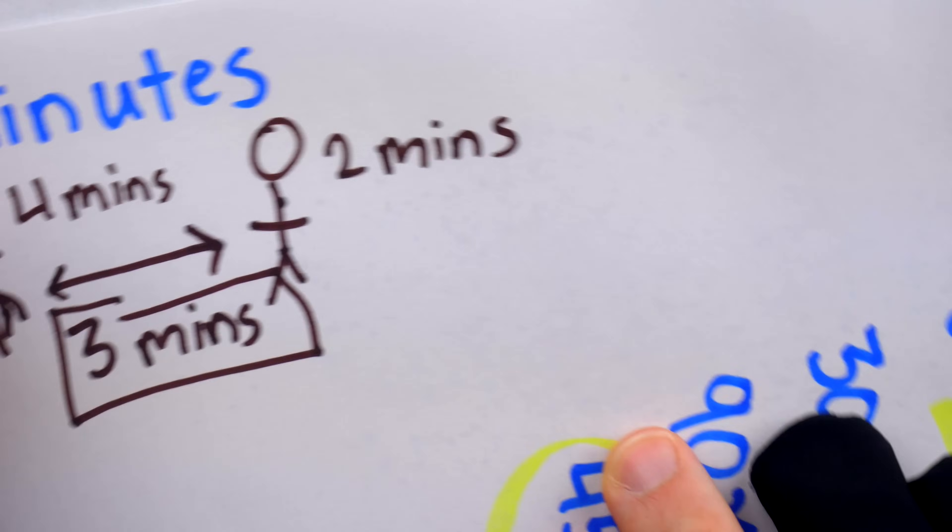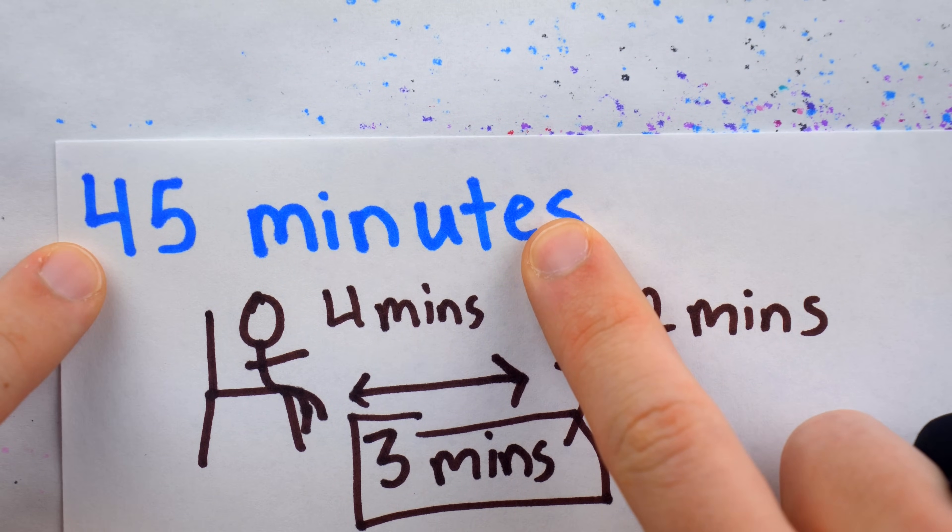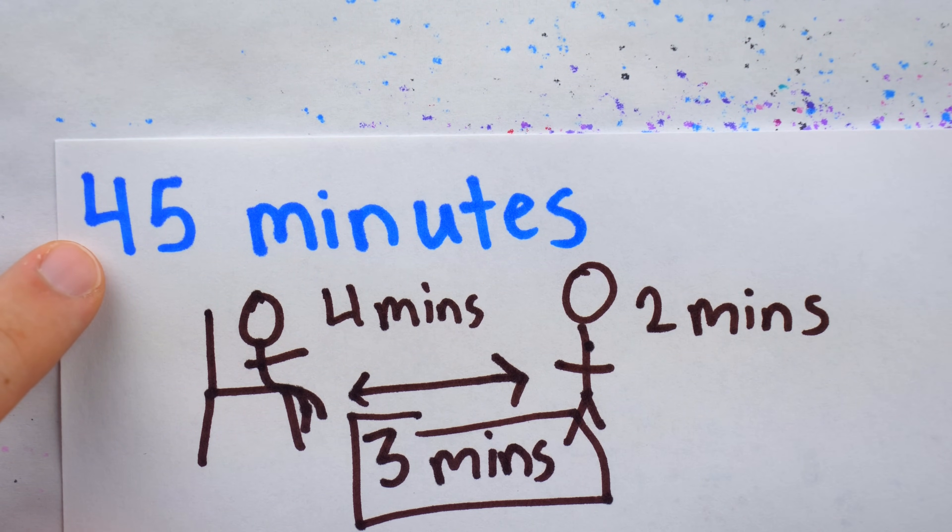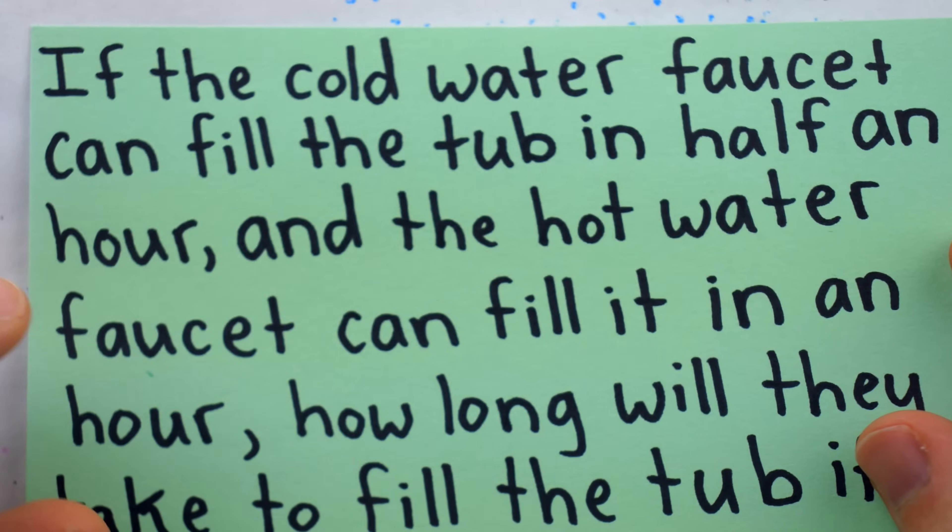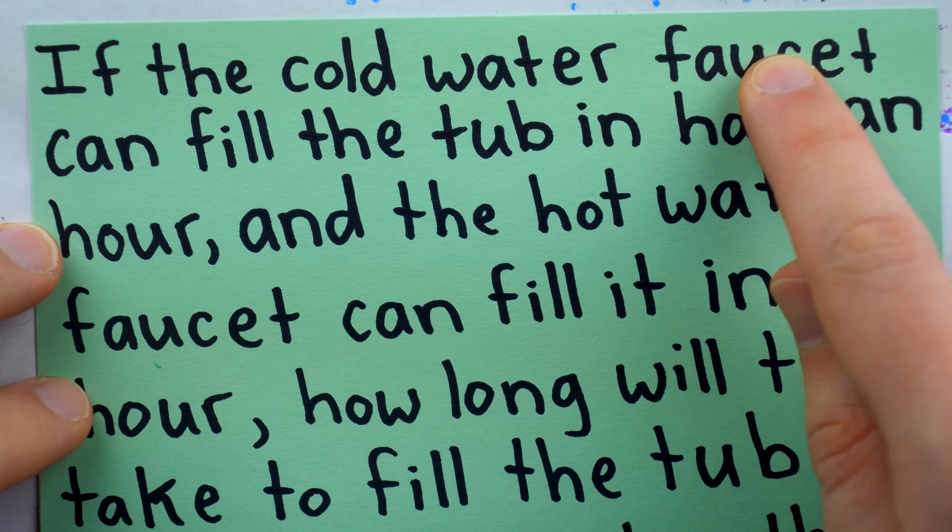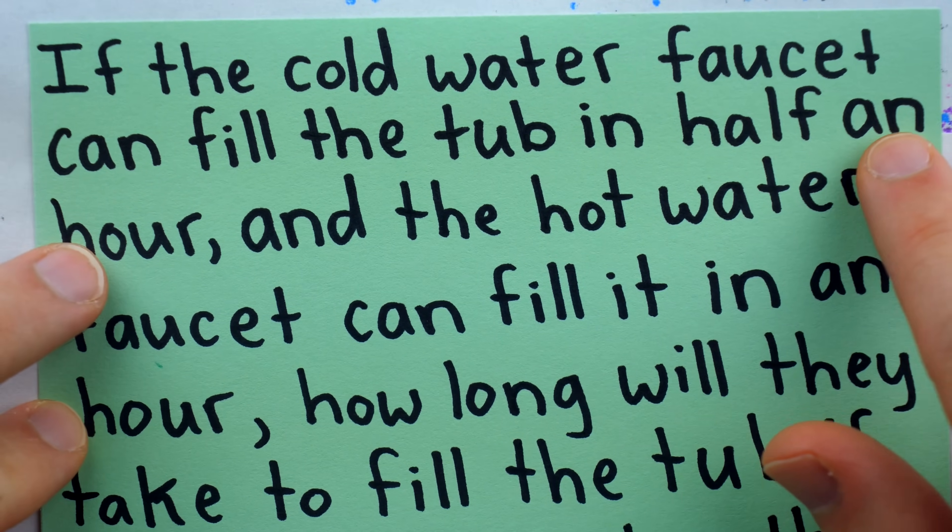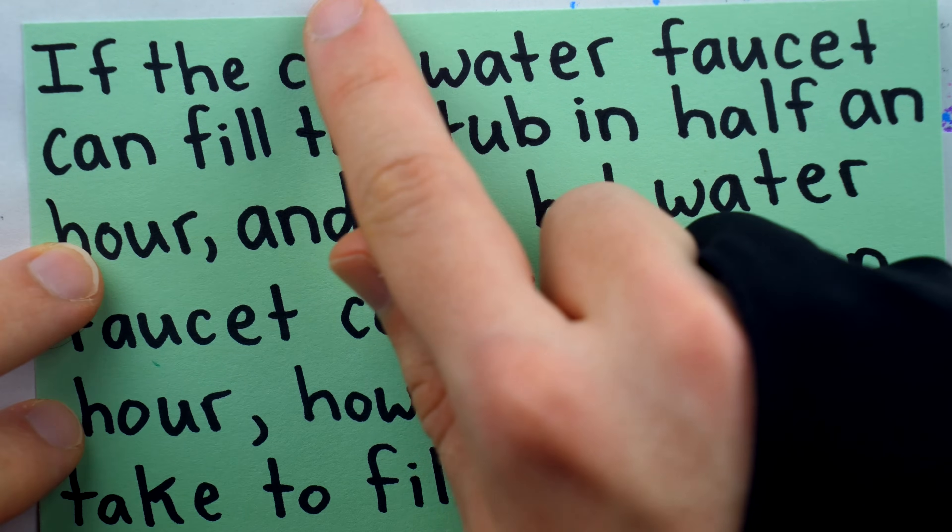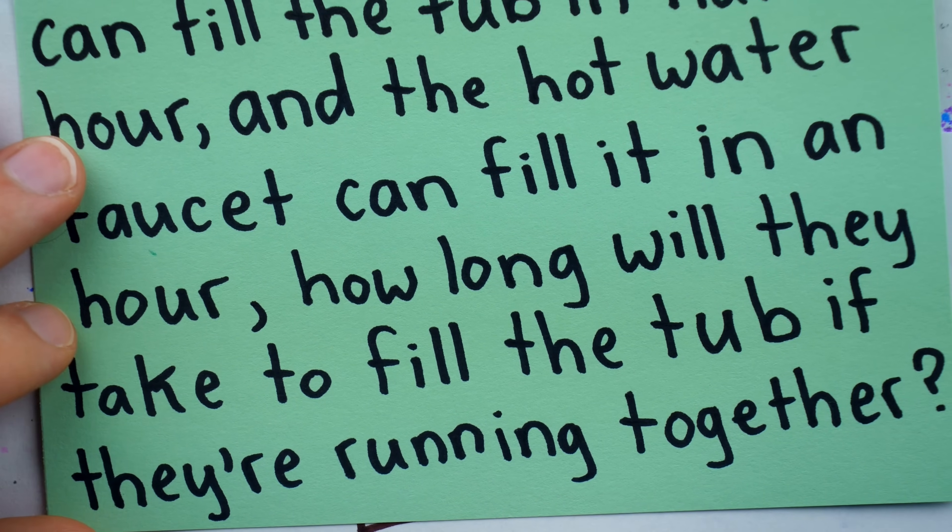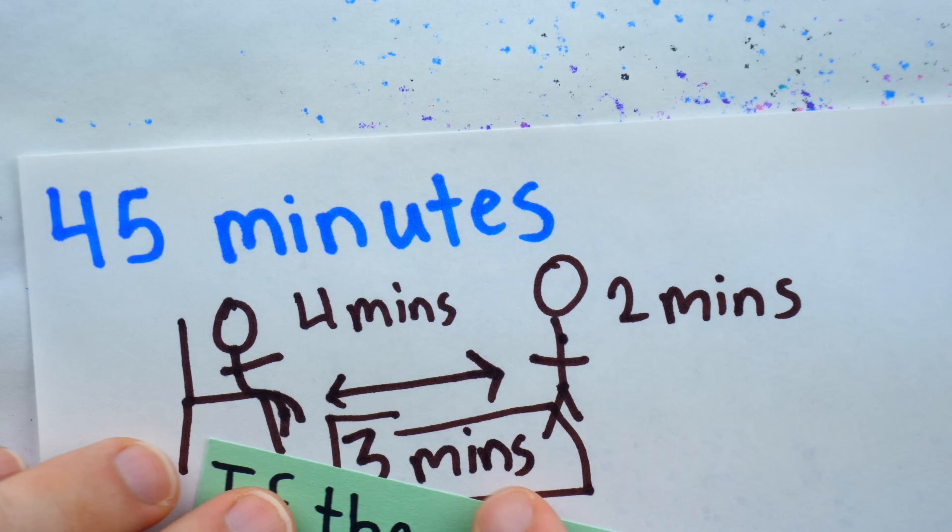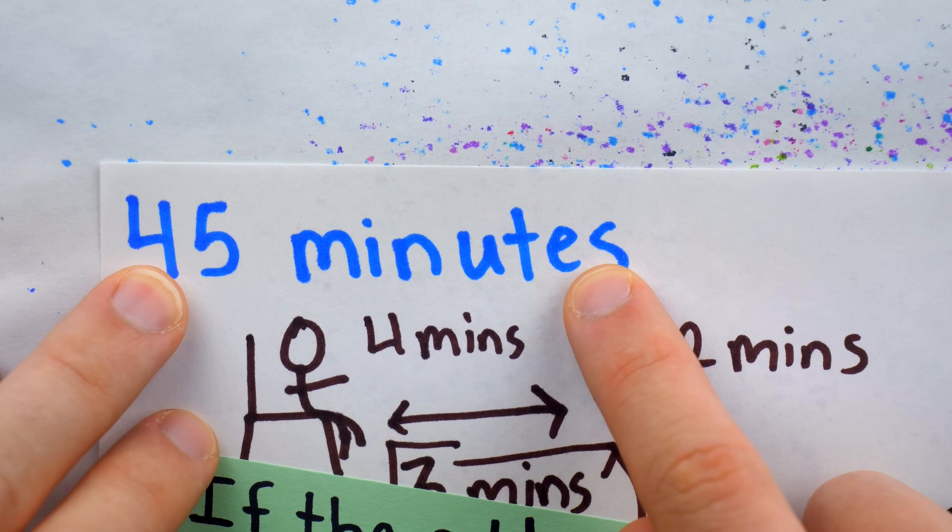Even if you don't take time to examine the logical errors of this solution, it's clear that it's an absurd answer. The problem already told us that the cold faucet, all on its own, fills the tub in half an hour. So there's no way that the cold faucet running with an additional faucet is going to take longer than half an hour. That wouldn't make any sense.